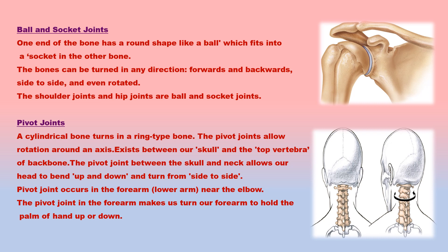In a pivot joint, a cylindrical bone turns in a ring-type bone, allowing rotation around an axis. A pivot joint exists between our skull and the top vertebra of the backbone, allowing the head to bend up and down and turn side to side. The pivot joint in the forearm makes us turn our forearm to hold the palm of the hand up or down. Pivot joints occur in the neck and forearm.